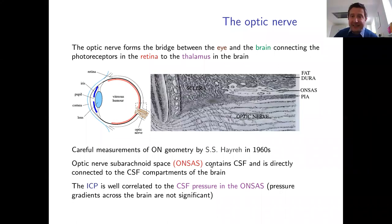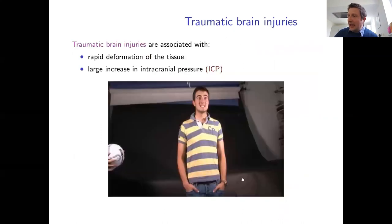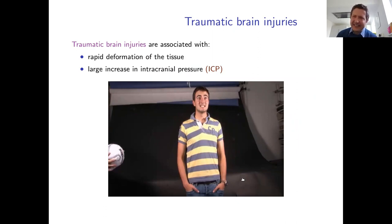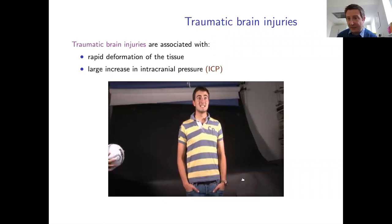Now, what happens when the brain undergoes an injury? Such injury could originate from a blow to the head or — an unpleasant but important application — shaken baby syndrome, where non-accidental head injury in infants can cause retinal hemorrhages. Understanding how those hemorrhages arise and what can be said about their origin is therefore clinically important.